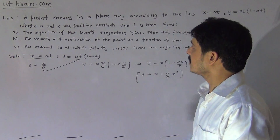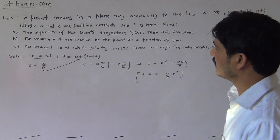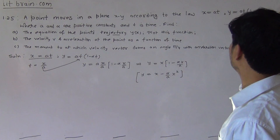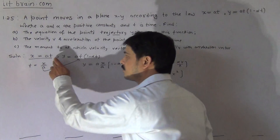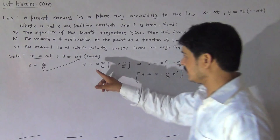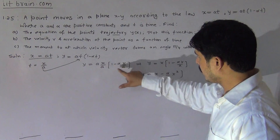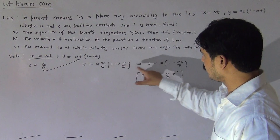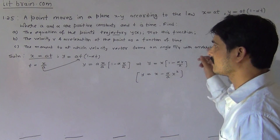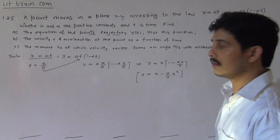The equation of trajectory means we have created a relation between x and y, independent of time. So if a point moves in the plane xy according to the law x equal to at and y equal to at(1 minus alpha t), we obtain t equal to x/a from the first equation and substitute into the second to get y equal to x minus (alpha/a)x squared. This is the equation of the point's trajectory y as a function of x.